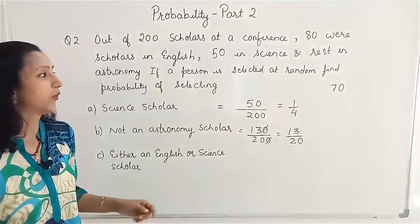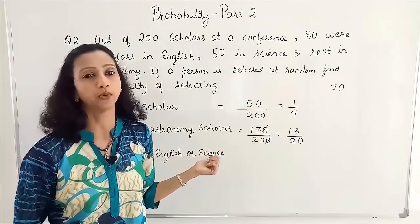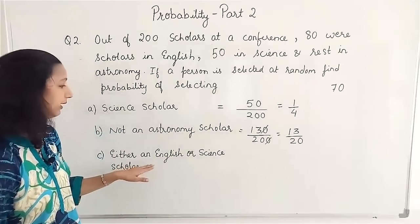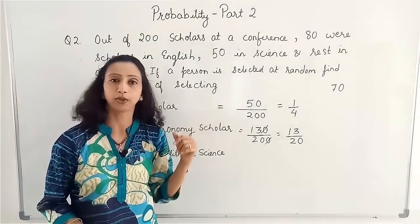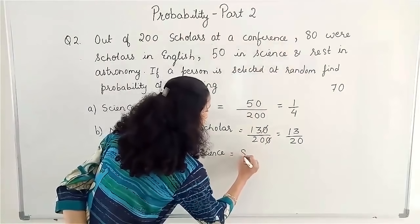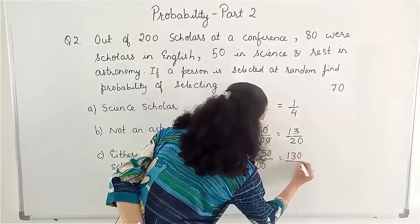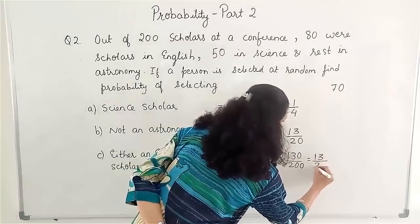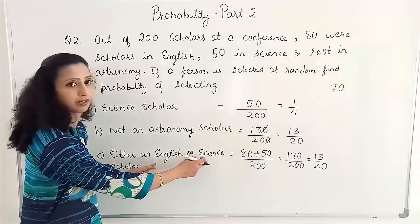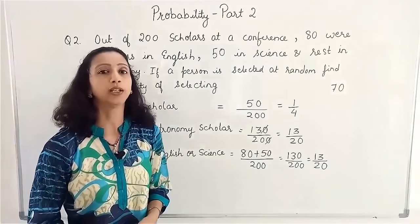This is the way we can do it. Alternatively, 70 by 200 gives the probability of Astronomy scholars, and then we subtract it from 1. For 'either English or Science': once again 50 Science and 80 English, so we add these two — 80 plus 50 — with the common denominator of 200, and get 130 by 200, giving 13 by 20 as the required probability. This equals the previous answer because 'either English or Science' is the same as 'not Astronomy'.